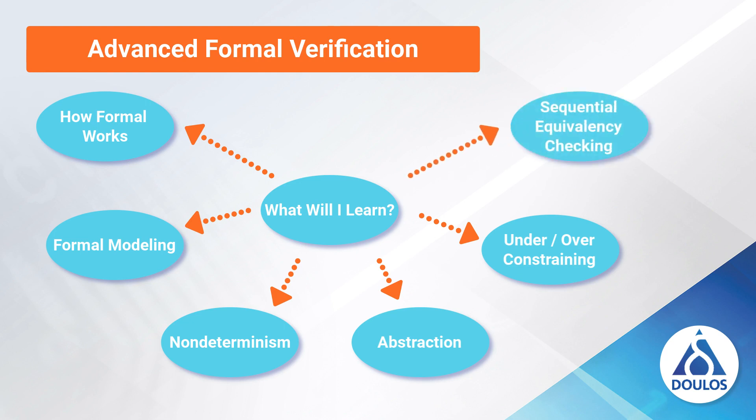Lastly, you'll learn about different types of formal equivalency and we'll introduce sequential equivalency checking. You'll understand how sequential equivalency checking works using an assume-guarantee approach. We'll discuss how to perform signal mapping for equivalency points, how to add helper assertions and hints to guide the sequential equivalency checking analysis, and a number of important applications that rely upon sequential equivalency checking.